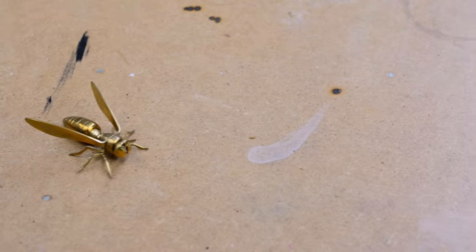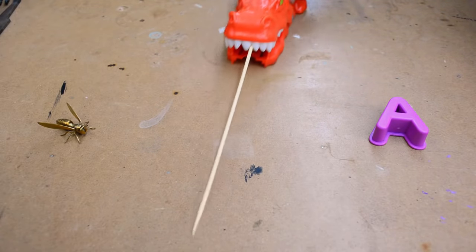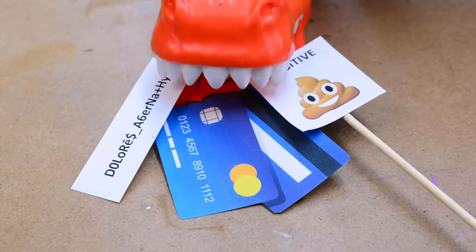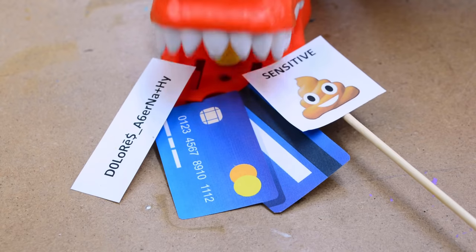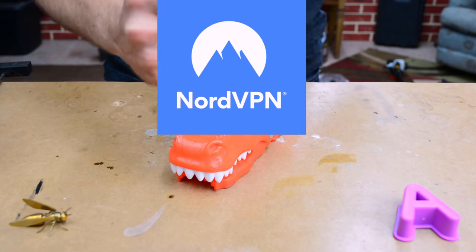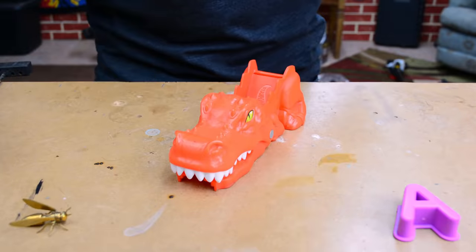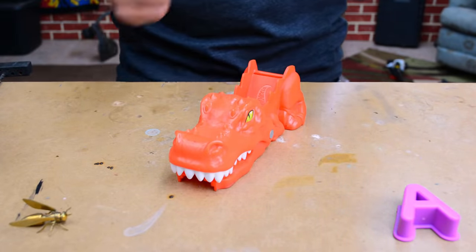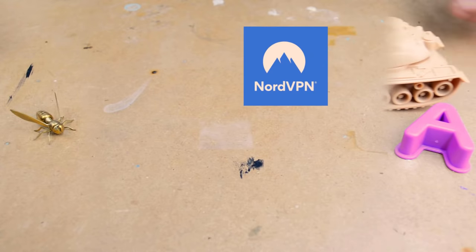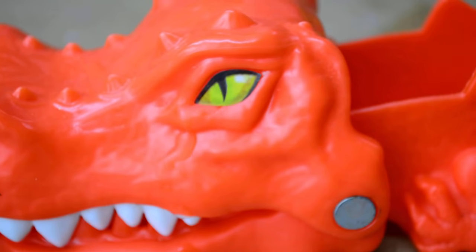Say your sensitive information is traveling from point A to point B. As it's traveling along, some bad actors come along and snatch that information up, stealing your passwords, banking information, and whatever else they can get. Well, what NordVPN does is they come in and smash those bad actors. Wait, what? Oh, they don't smash. Got it. Okay, so they cloak your information using a secure tunnel with military-grade encryption, hiding all your sensitive stuff.